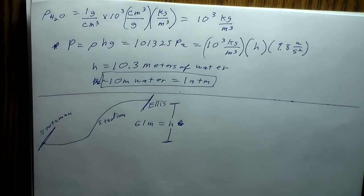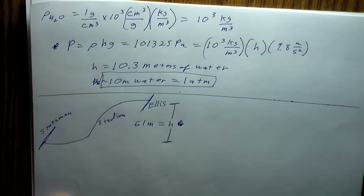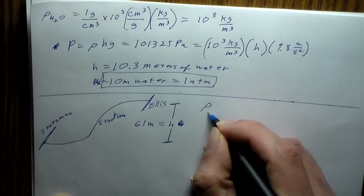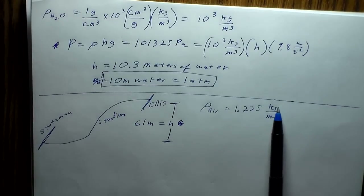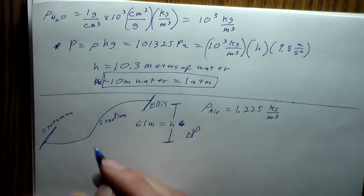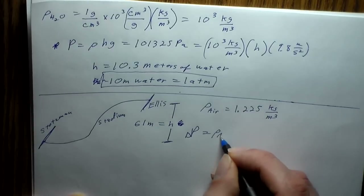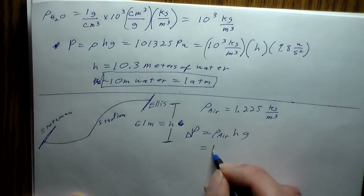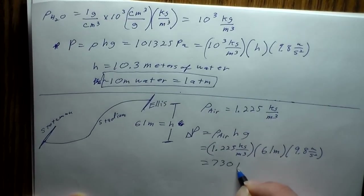With air, you usually can't use the pressure equation because density varies with altitude. But over a small altitude difference, density is constant enough that we can get away with it. The density of air is 1.225 kilograms per cubic meter. So the change in pressure equals 1.225 × 61 × 9.8, which works out to 730 Pascals difference.